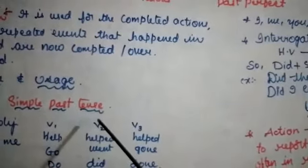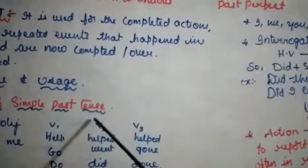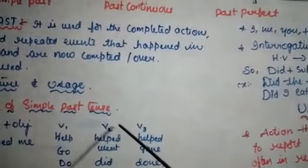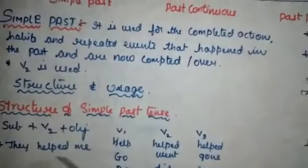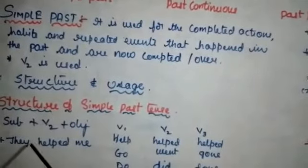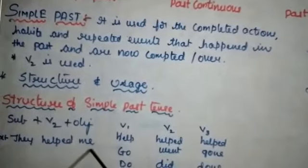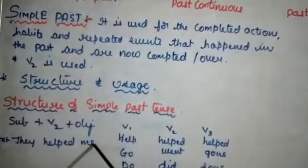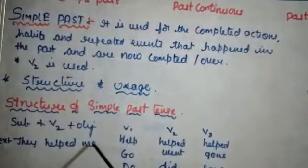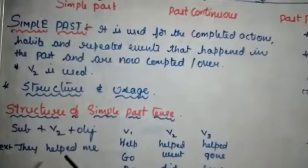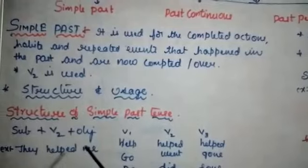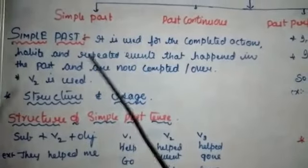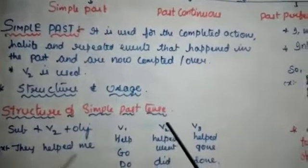For simple past we have to use V2 form. For example: 'They helped me.' — 'They' is the subject, 'helped' is V2, 'me' is the object. No helping verb is needed here — only Subject + V2 + Object. This is the structure of simple past.